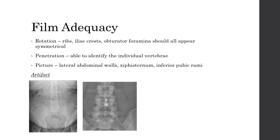On the adequacy of the film, it's very similar to what you look for in chest x-rays but in different ways. For rotation, look at the ribs, the iliac crests and the obturator foramina — they should all appear symmetrical. For penetration, you want to be able to see the outlines of each vertebral body behind the abdominal organs. For picture, you want to see both lateral abdominal walls, the xiphisternum and the inferior pubic rami, making sure the entire abdomen is captured and you're not going to miss any pathology.